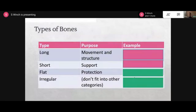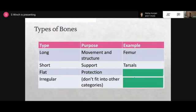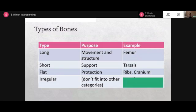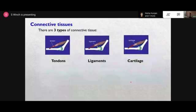For a long bone description you'd look at something like your humerus in your arm or your femur which is the top part of your leg. Short bones would be around your ankles or wrists - your tarsals and carpals. Flat bones for protection include your ribs and cranium. Irregular bones - your vertebrae - don't fit neatly into a category, though they serve a supporting purpose.